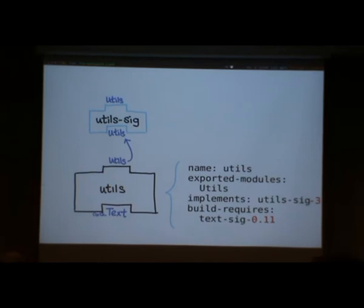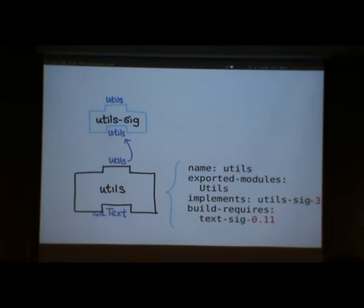Question: is there a requirement that signature packages contain only signatures and not modules? They could contain only signatures, but there's no reason they have to. So you can take an implements field that lists utils-sig and export a mix of signatures and modules. A particular use case is when you want the signature to contain some data type relations and you want that data type to be shared across all of the modules.